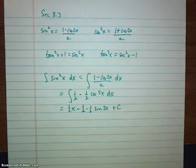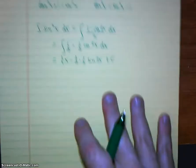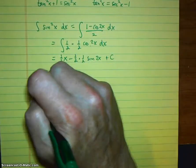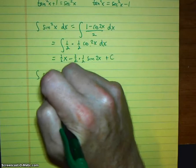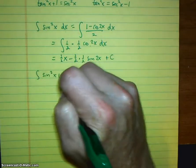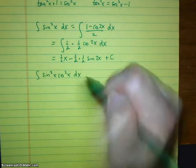Alright, well that seems pretty nice and cozy, I guess. It does get worse. Let me give you an example. What if we had integral sine squared x, cosine squared x, dx.